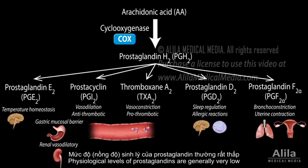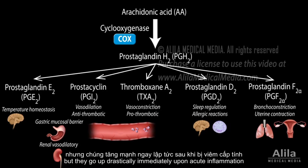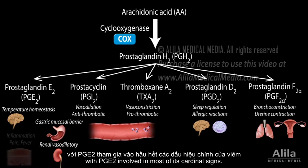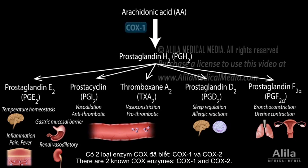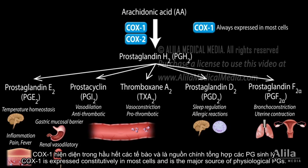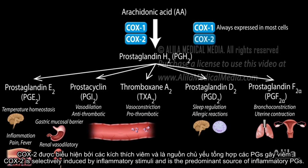Physiological levels of prostaglandins are generally very low, but they go up drastically immediately upon acute inflammation, with PGH2 involved in most of its cardinal signs. There are two known COX enzymes: COX1 and COX2. COX1 is expressed constitutively in most cells and is the major source of physiological prostaglandins. COX2 is selectively induced by inflammatory stimuli and is the predominant source of inflammatory prostaglandins.